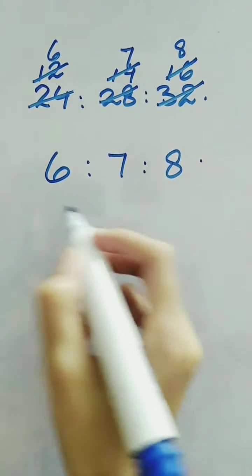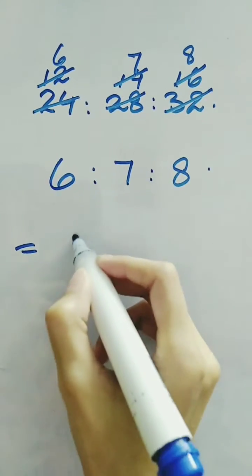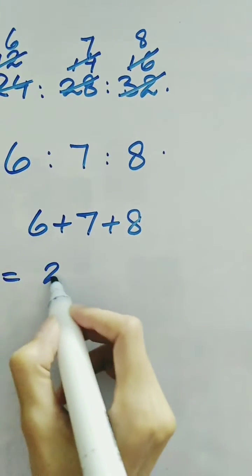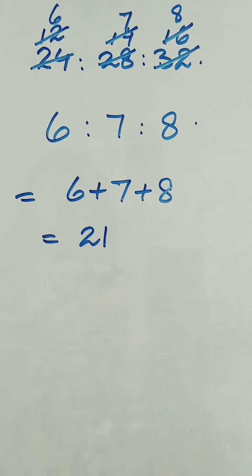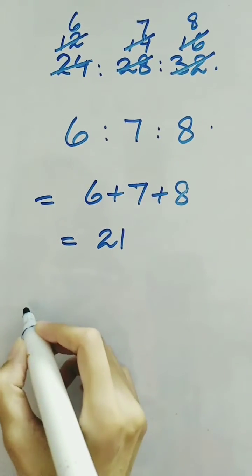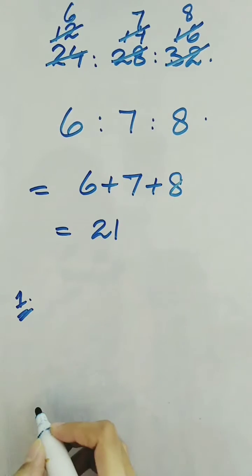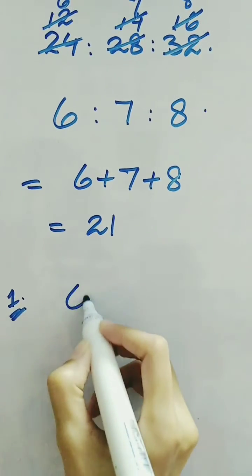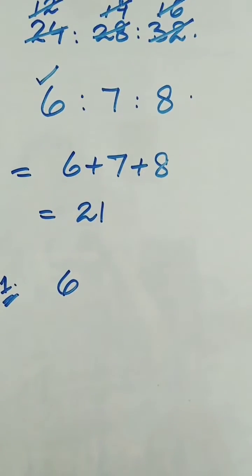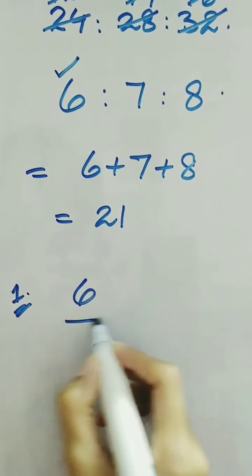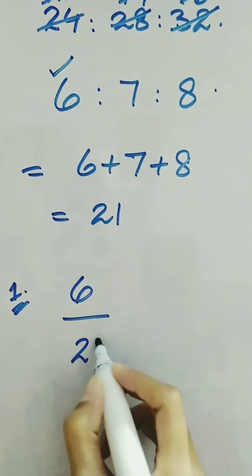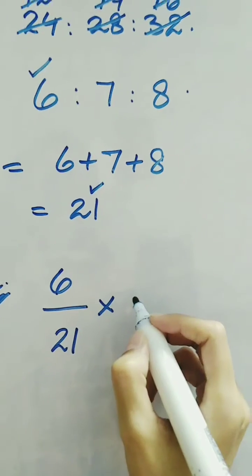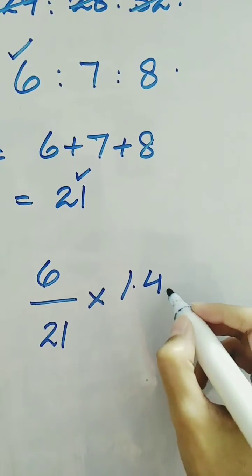First, we are going to find out the sum of these three numbers, which is 21. Now we are going to find out the amount for each individual. For the child whose age is 24, we write 6 in the numerator — it is the ratio corresponding to age 24 — and divide by the total sum of 21, then multiply by the total bill of 1.4 million dollars.